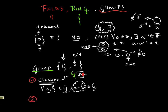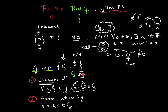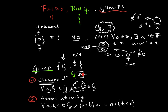The second axiom for groups is associativity. For all a, b, and c which are elements of G, if you operate a with b and then operate that result with c, it will be equivalent to having a operated with the result of b operated with c. I think you have some background on associativity so I'll move forward.